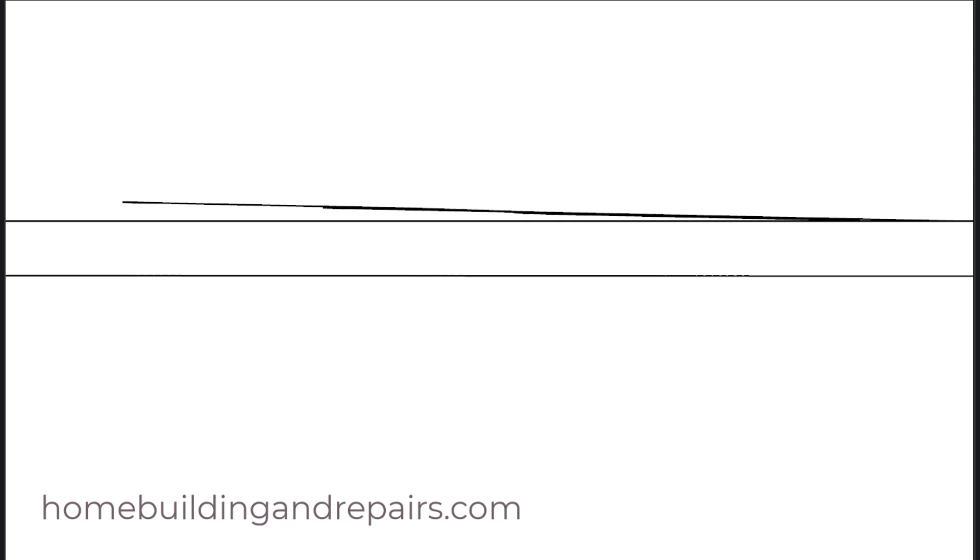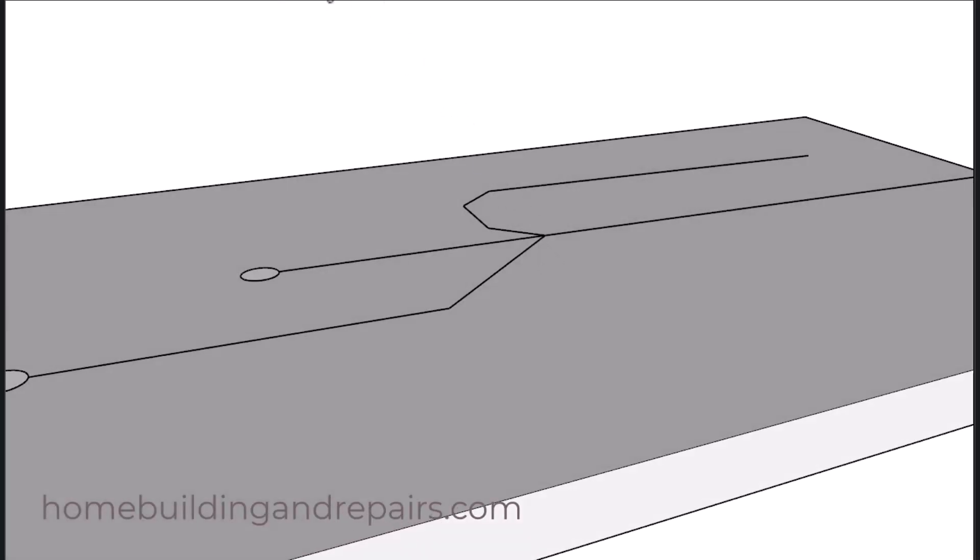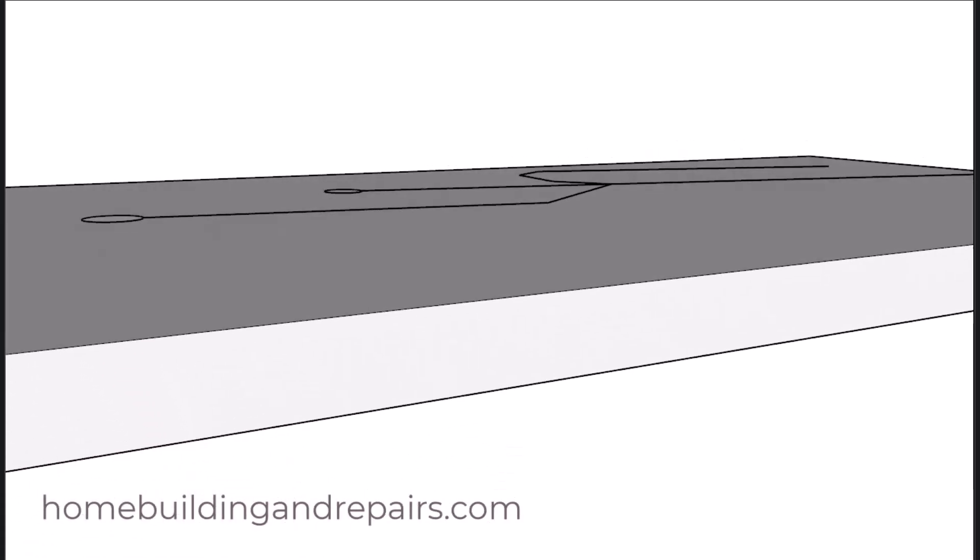However, if we slope the system a quarter of an inch per foot, then there's a good chance we're going to have enough slope at the Y connecting point. And the reason why should be obvious in the video here.